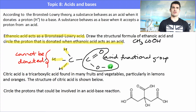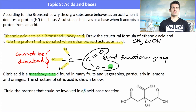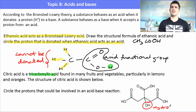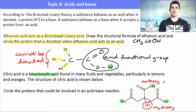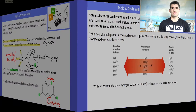Citric acid is a tricarboxylic acid — tri meaning it can donate three protons. Found in fruits and vegetables, especially lemons, its structure has three carboxyl groups and one hydroxy group (OH) on the middle carbon. That hydroxy group is not acidic and won't donate a proton; only the hydrogens on the three carboxylic acid groups — highlighted in green — are donated when citric acid reacts with water.